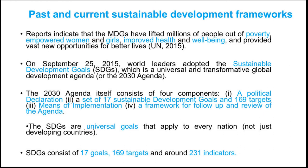On September 25, 2015, world leaders adopted the Sustainable Development Goals, or SDGs, which is a universal and transformative global development agenda — broadly speaking, the 2030 Agenda. The 2030 Agenda itself consists of four components: first, a political declaration by member countries; second, a set of 17 sustainable development goals and 169 targets; third, means of implementation; and fourth, a framework for follow-up and review of the agenda.